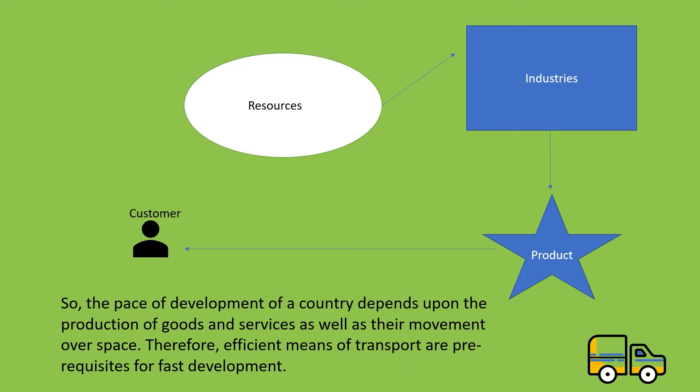Therefore, efficient means of transport are a prerequisite for faster development. Prerequisite means a condition. For example, if you want to become an engineer, you have to clear the entrance exam; if you want to become a doctor, you have to clear the NEET exam — that is a prerequisite. Similarly, if a country has to develop, it should have efficient means of transport.